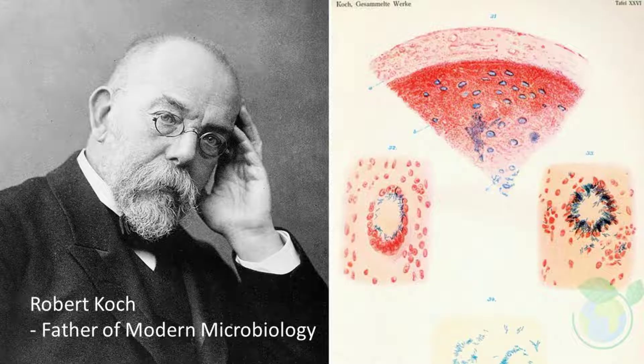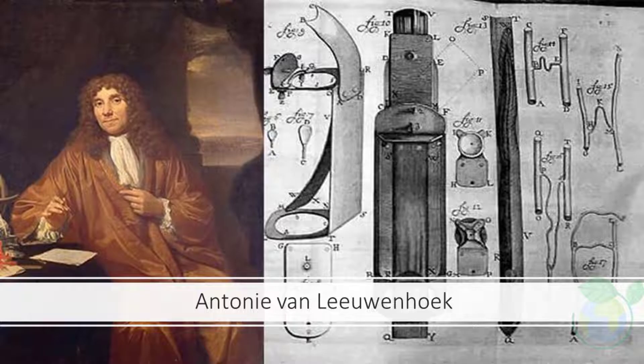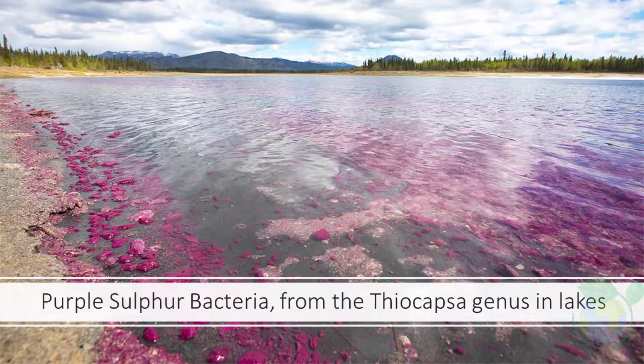Biofilms were observed a few centuries before their relevance to the persistence of disease was realized. In 1684, a Dutch scientist, Anthony van Leeuwenhoek, saw dental plaque using his self-constructed microscope and described it as scurf. During the early part of the 20th century, many scientists reported that most bacteria were not free-floating but were attached to surfaces such as the bottom of lakes.